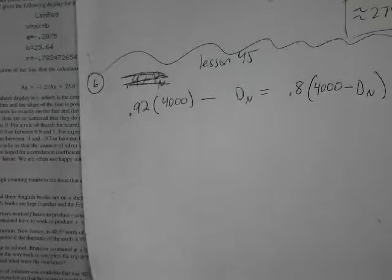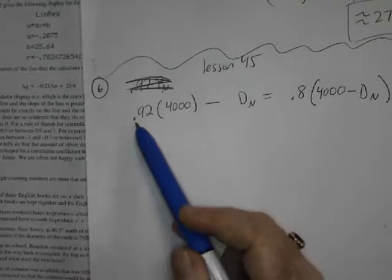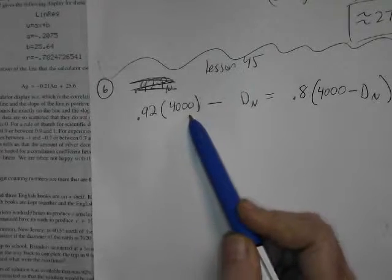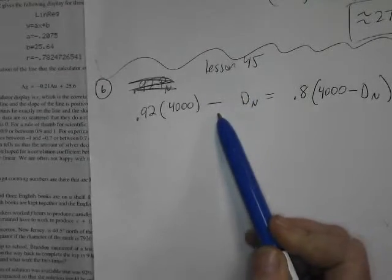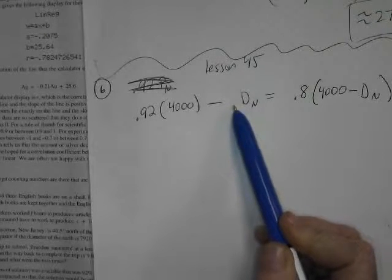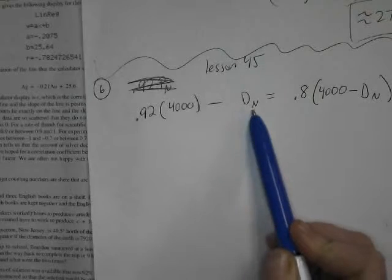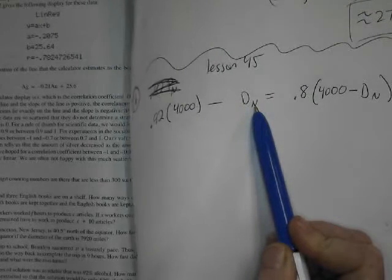It says 4,000 liters of solution was available that was 92% alcohol, so it's going to be .92 times, I'm just going to call it the Forden number, but this time I'm going to try subtracting out. I still don't have a percentage here. It's going to be, so I guess what I'm subtracting out is alcohol. Does that seem right?